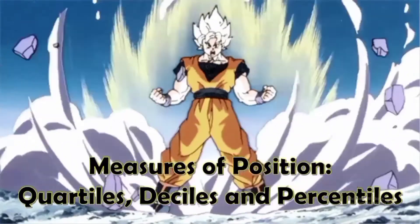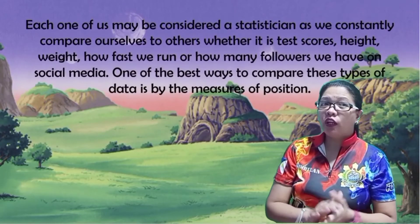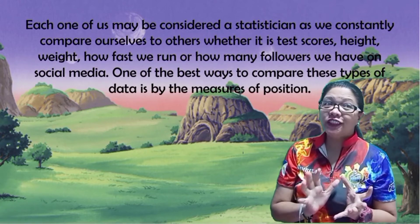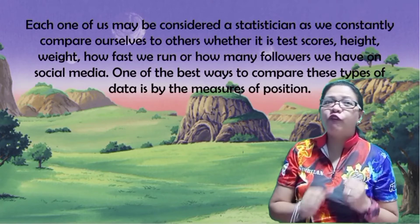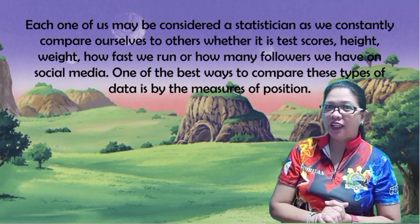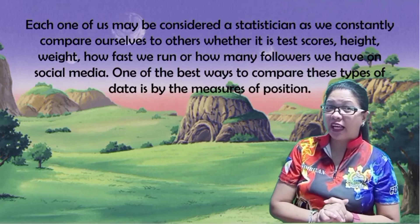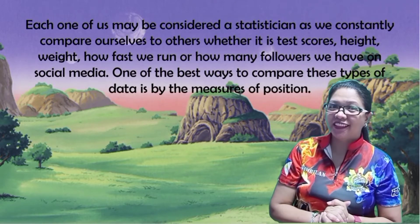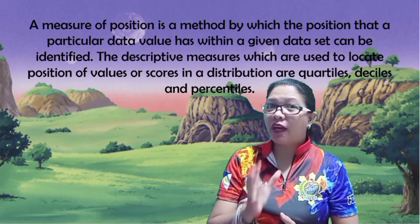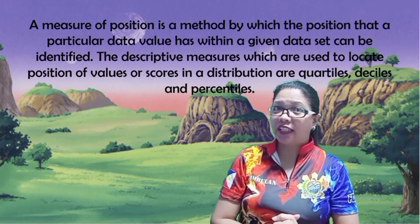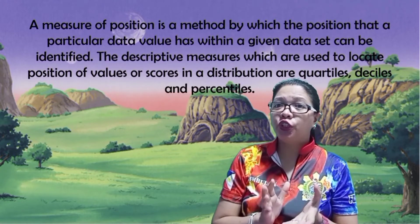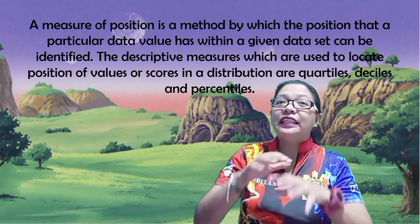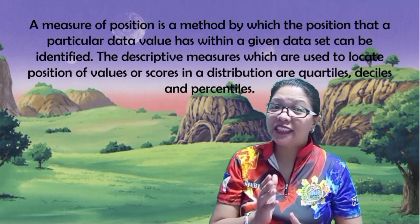Measures of Position: Quartiles, Deciles, and Percentiles. Each one of us may be considered a statistician, as we constantly compare ourselves to others — whether it is test scores, height, weight, how fast we run, or how many followers we have on social media. A measure of position is a method by which the position that a particular data value has within a given dataset can be identified. The descriptive measures used to locate the position of values in a distribution are quartiles, deciles, and percentiles.